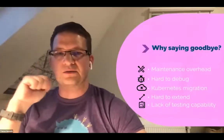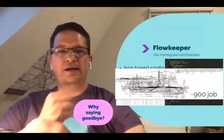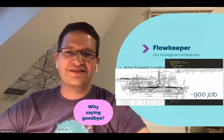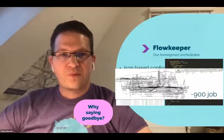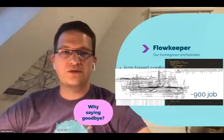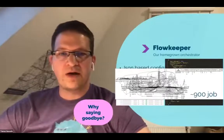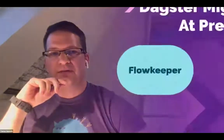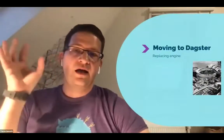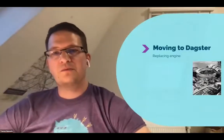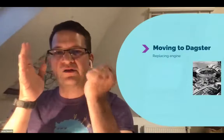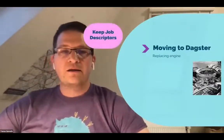That was the time when we talked with the Dagster team and they convinced us to try out their tool and see how it works for us. That's when we decided to migrate to this new system. But of course, if you want to migrate, you don't want to rewrite all your ETL jobs from scratch. So our first requirement was to keep our JSON descriptors and use them to generate solids in Dagster. We had a car and we wanted to replace the engine with a way better, more reliable one.